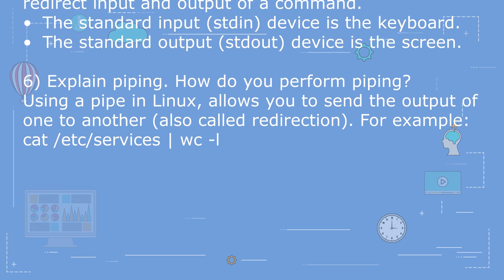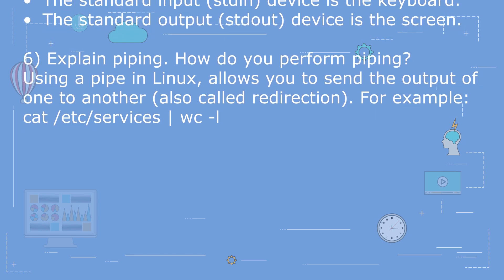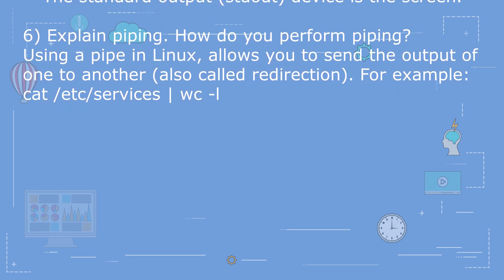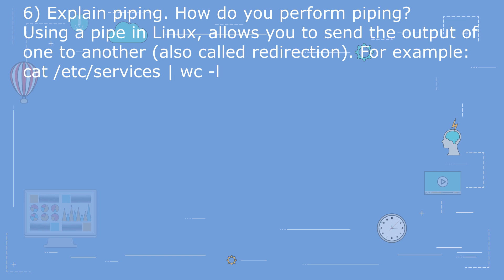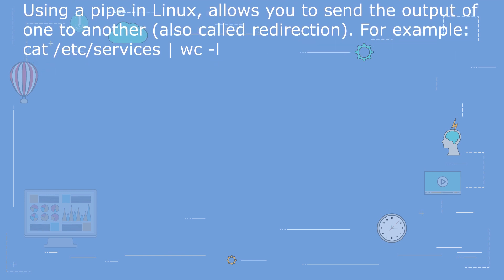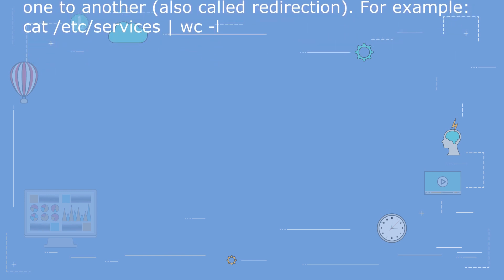Question 6: Explain piping. How do you perform piping? Answer for this question is: Using a pipe in Linux allows you to send the output of one to another, also called redirection.